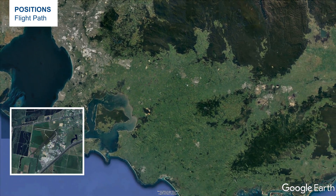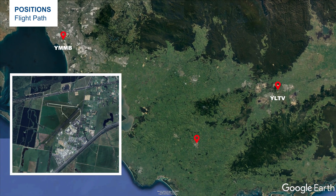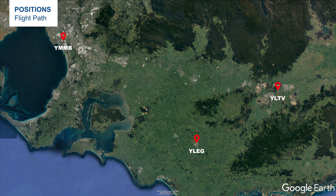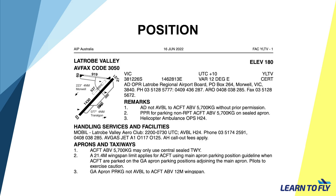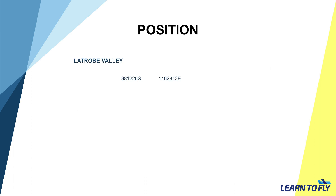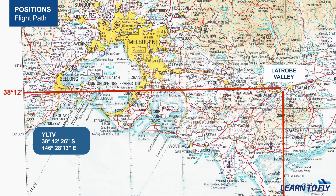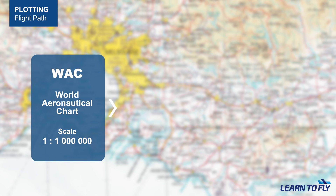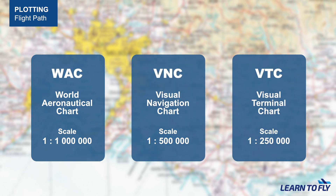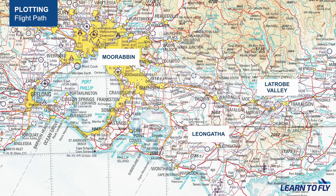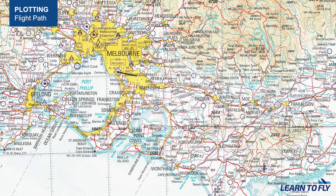Assuming the route of the day is Moorabbin to Latrobe Valley, to Liangatha, and back to Moorabbin — firstly, locate those airports on the map. If you are unable to locate them, look them up in the ERSA and find the latitude and longitude, and you should be able to plot them on the map. When plotting the route, we will start with the smallest scaled map, which is the WAC, then move on to the VNC, and lastly the VTC. After locating all of the airports, connect them all with straight lines — be aware, you need to connect from the centre of the purple circle.